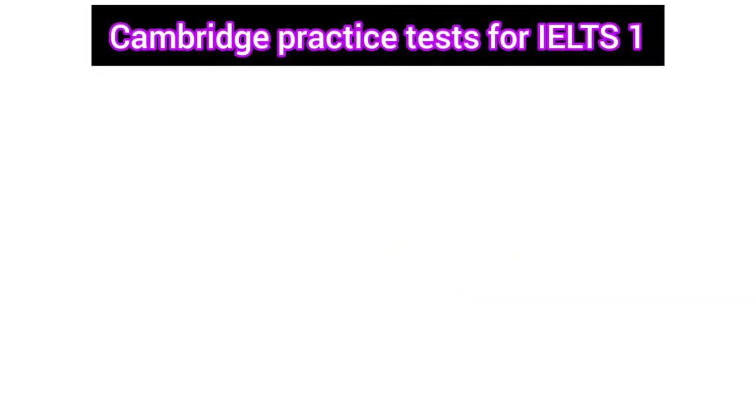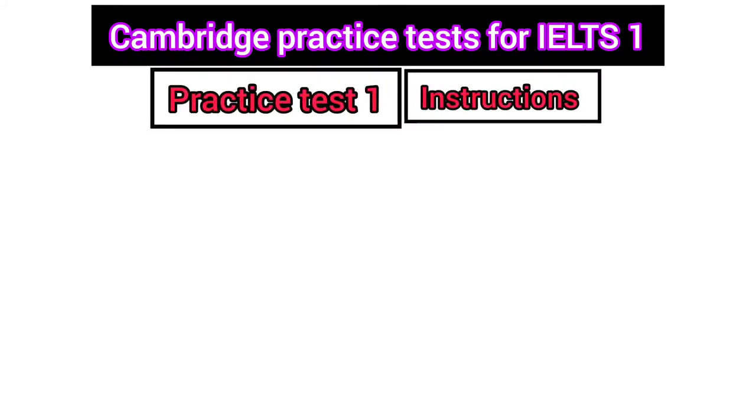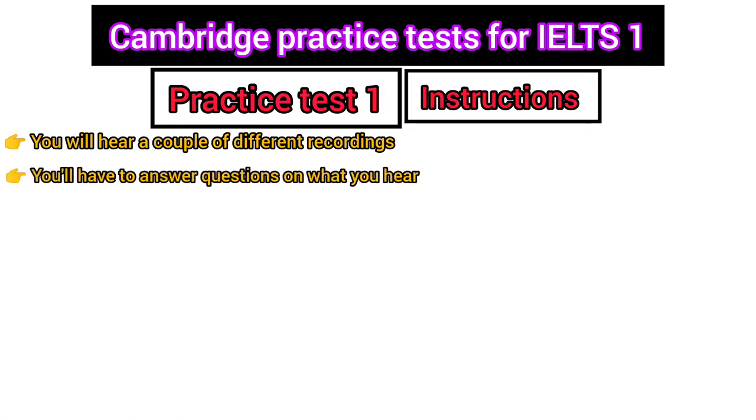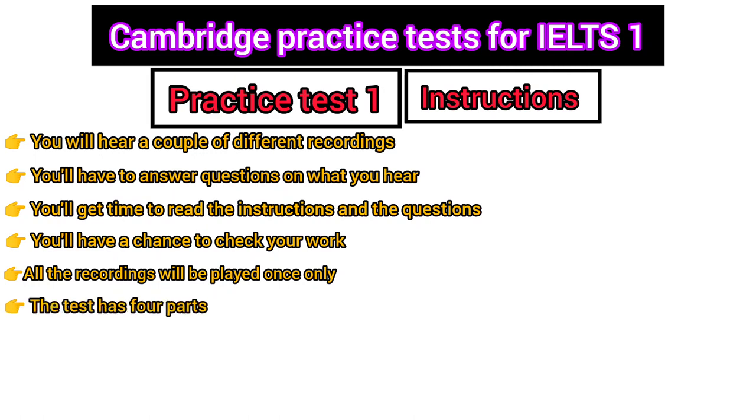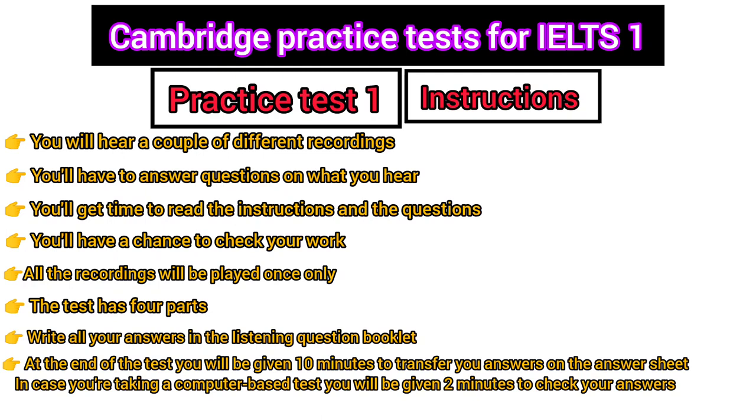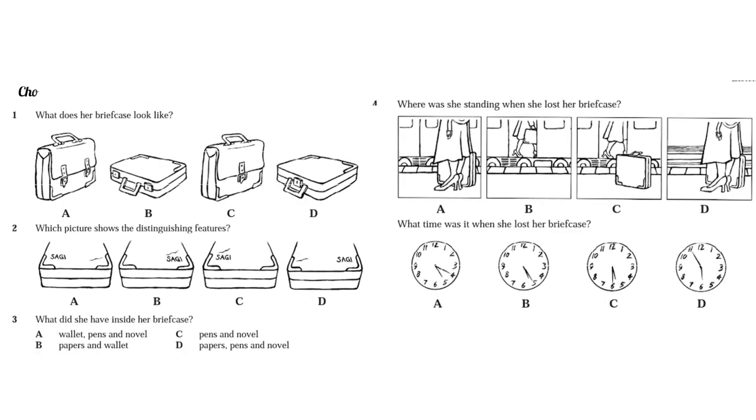Cambridge Practice Tests for IELTS 1, Practice Test 1. You will hear a couple of different recordings. You'll have to answer questions on what you hear. You'll get time to read the instructions and the questions, and you'll have a chance to check your work. All the recordings will be played once only. The test has four parts. Write all your answers in the listening question booklet. At the end of the test, you'll be given 10 minutes to transfer your answers on the answer sheet. In case you're taking computer-based IELTS, you'll be given 2 extra minutes to check your answers.